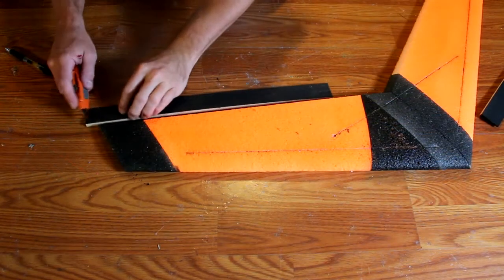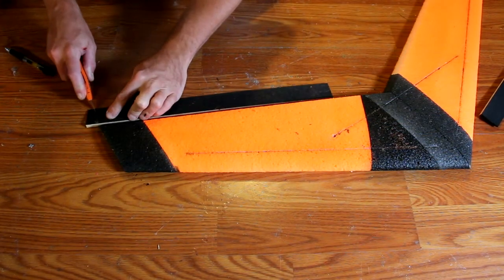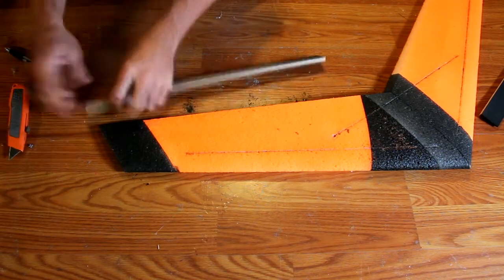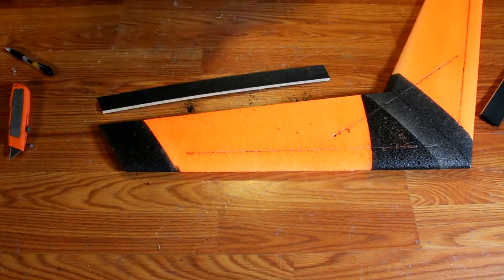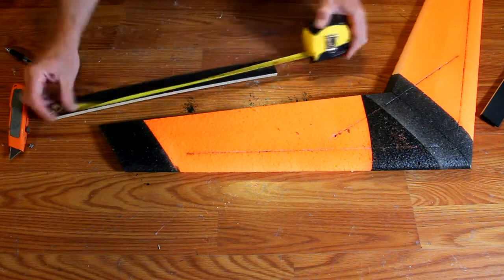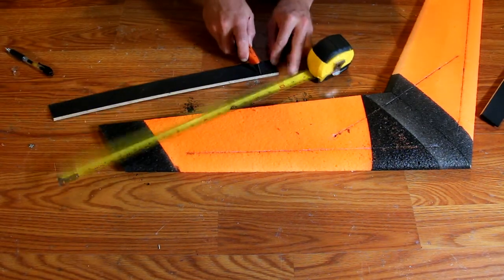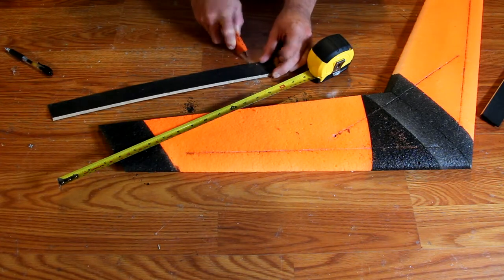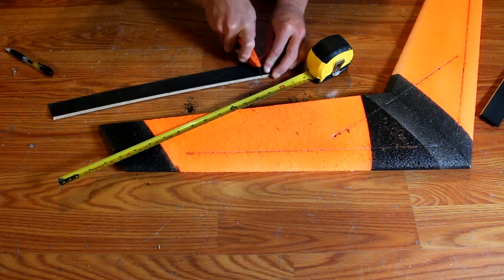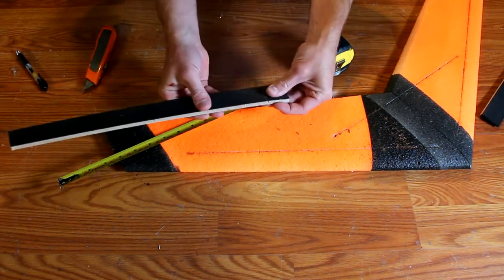Cut your spars down to fit the wing profile. I'm cutting mine to 15 inches in length as this will give me plenty of room to clear the six inch prop I'll put on the plane as well as make it maneuverable for racing. You can make them any size that you want. Smaller is going to be less maneuverable, larger is going to be a little bit more maneuverable.